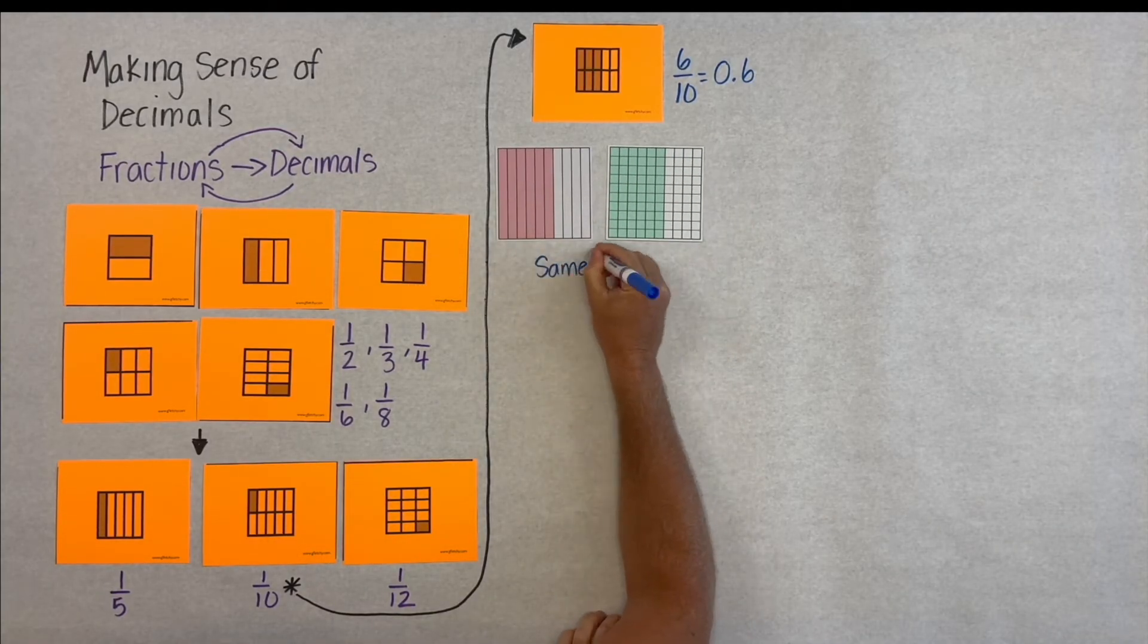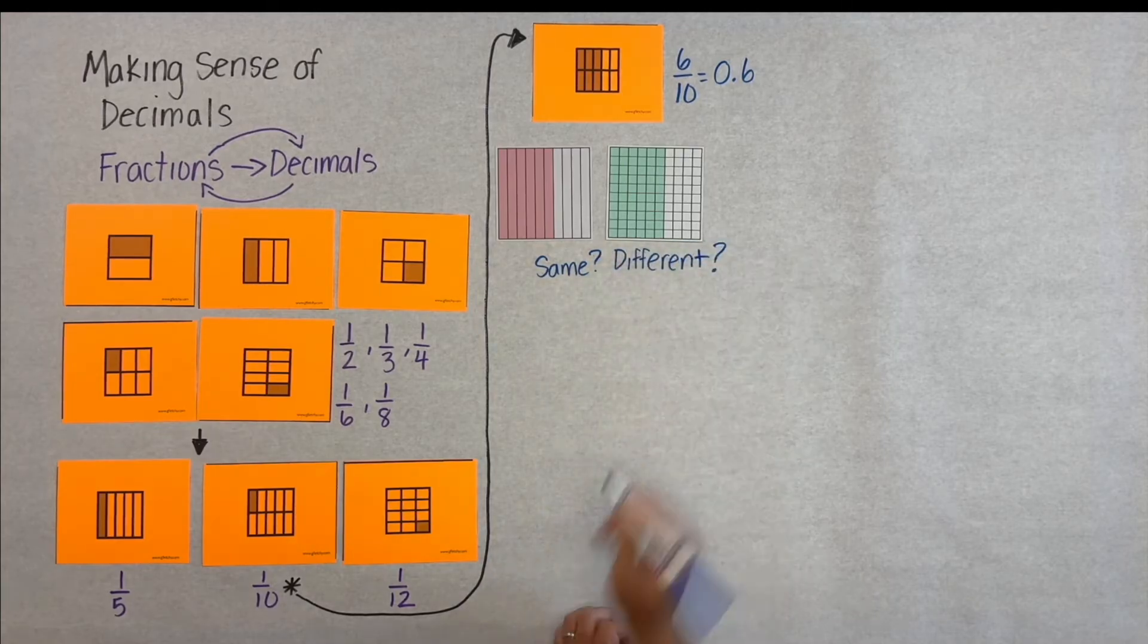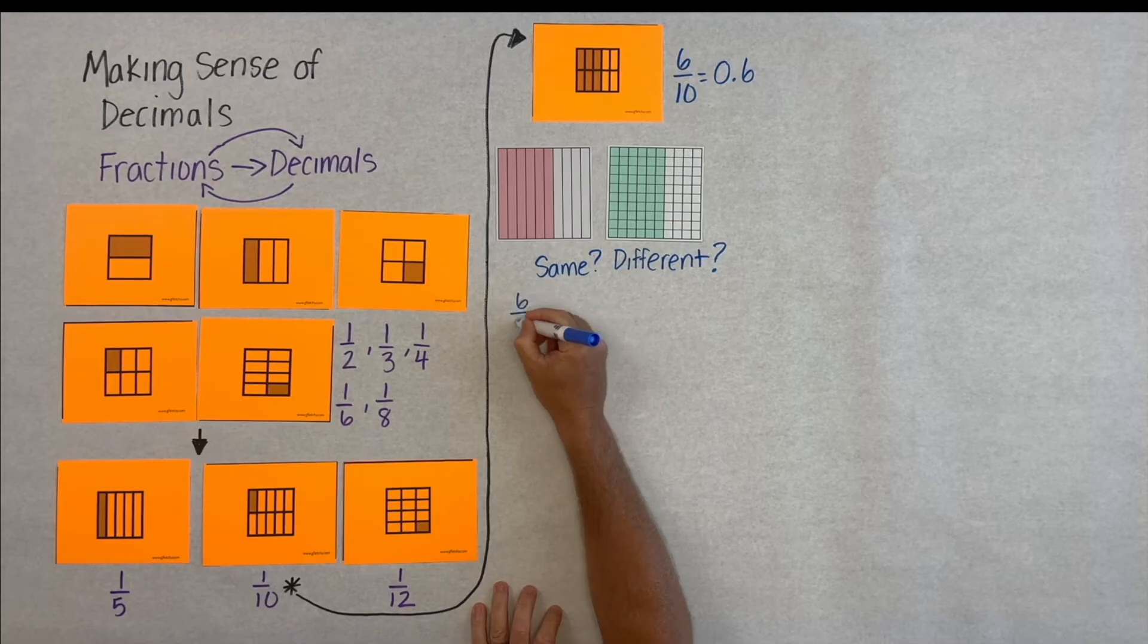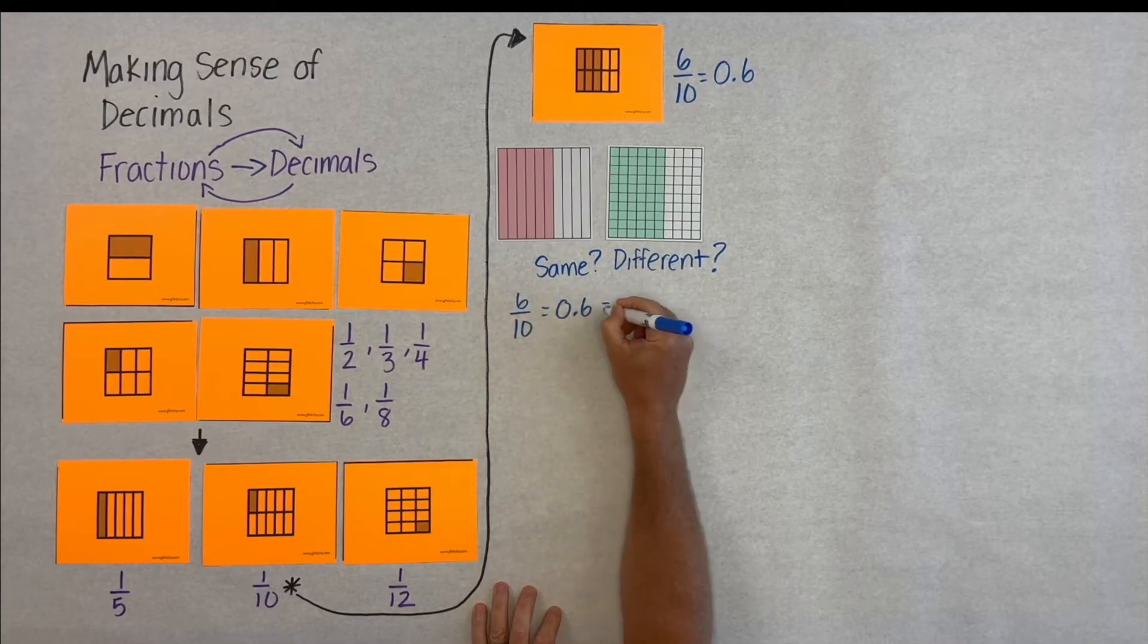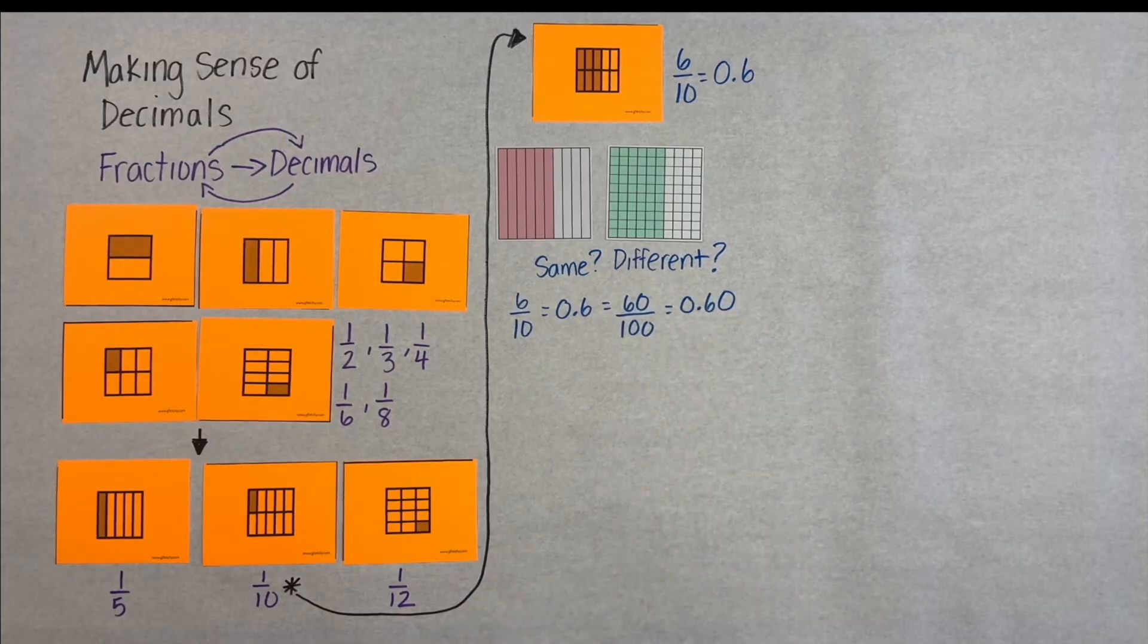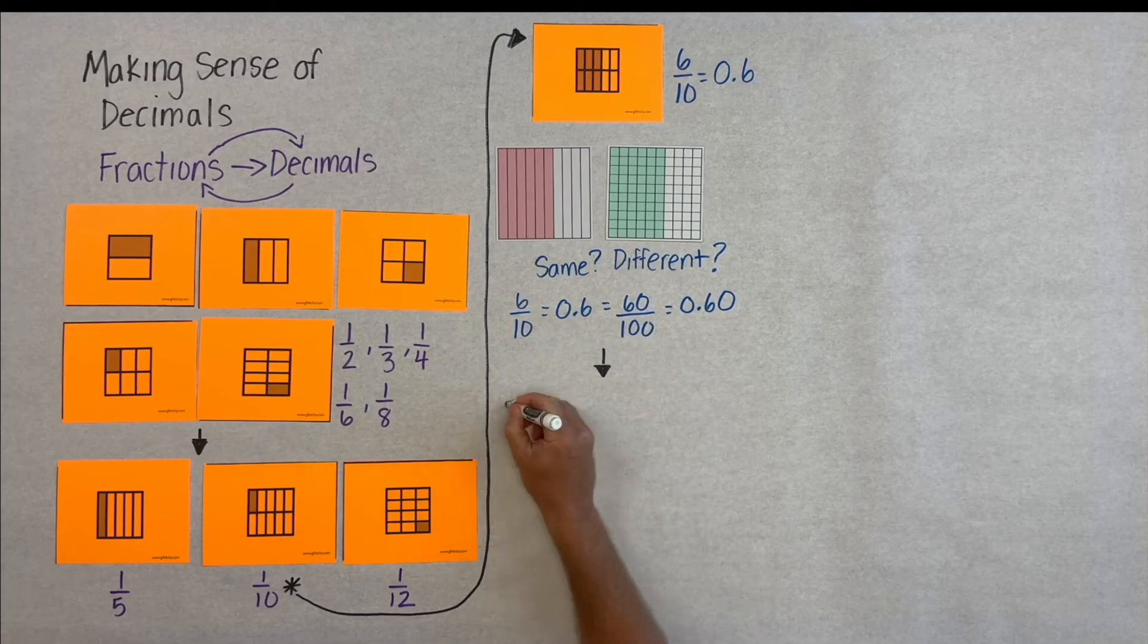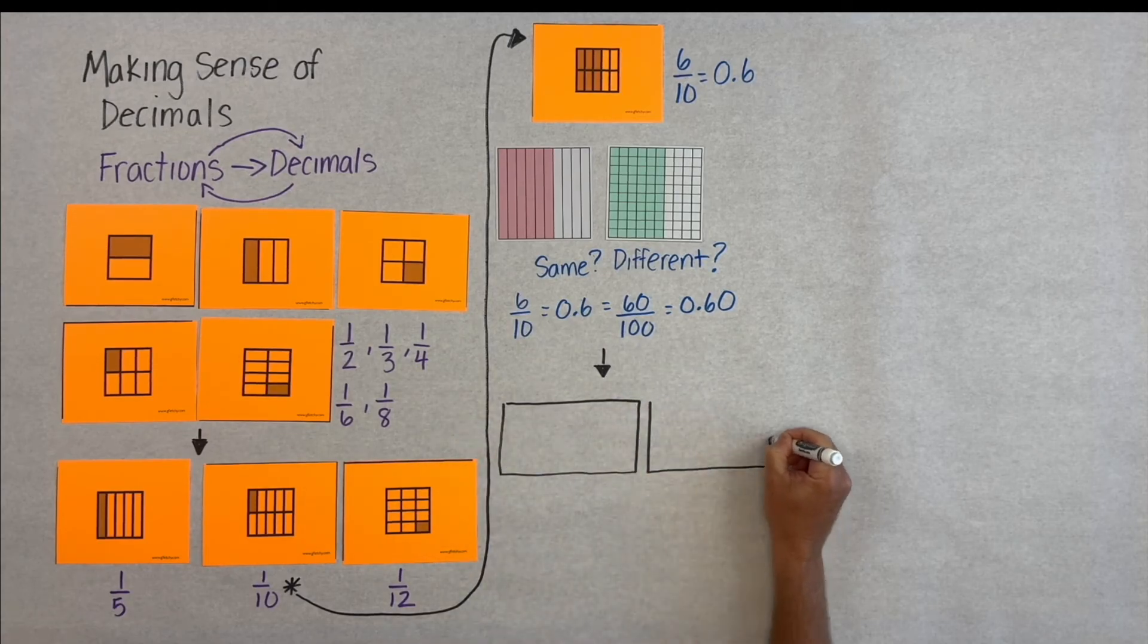What's the same, what's different between these two decimal squares? Well, you might notice that they both have the same quantity colored in. But students now make this connection that six-tenths and sixty-hundredths are the same. It's this conceptual understanding that we really need students to be able to make.